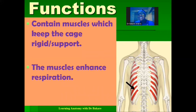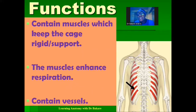As the intercostal muscles contract or relax, they adjust the volume of the thoracic cavity. These spaces also create accommodation for costal vessels, which we will see as we go through this lecture.